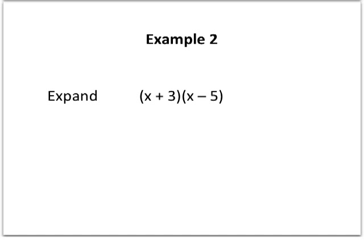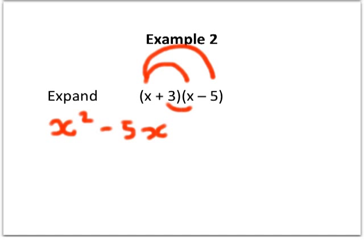A slightly harder example is this one — expanding (x + 3)(x − 5). The process to start with is the same. x times x is x squared. x times minus 5 is minus 5x. 3 times x is 3x. And then we need to be very careful because 3 times minus 5 is minus 15 — remembering that a plus times a minus is a minus. So (x + 3)(x − 5) expands to x squared minus 5x plus 3x minus 15.